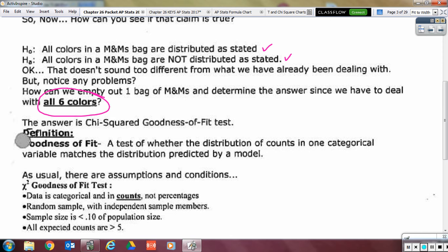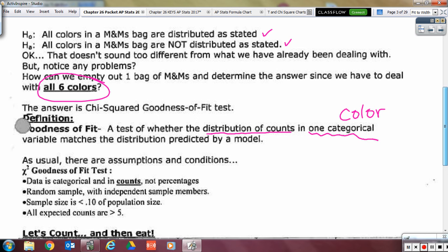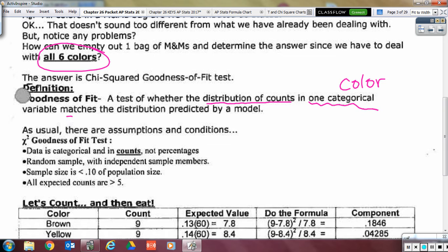We're going to test whether the distribution of the counts that we got of one particular variable. What's our particular variable that we're going to be doing with our M&M's? Color. Very good. So our variable for our M&M's is our color. And we want to see if that matches the distribution predicted, basically what they claim, by the model.